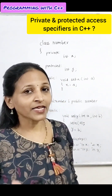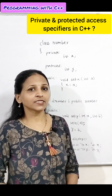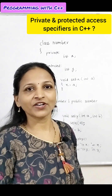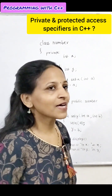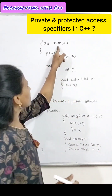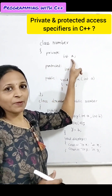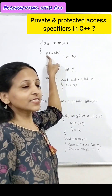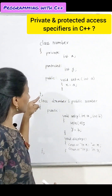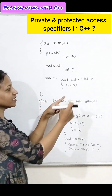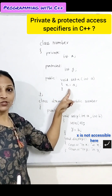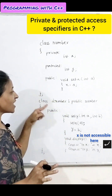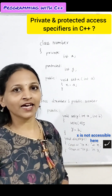Private members are accessible only inside the class. Anywhere else, you cannot access private data of a class. For example, this Number class has an X data member which is declared as private. It is accessible only inside this class, but outside this class, you cannot access private data.